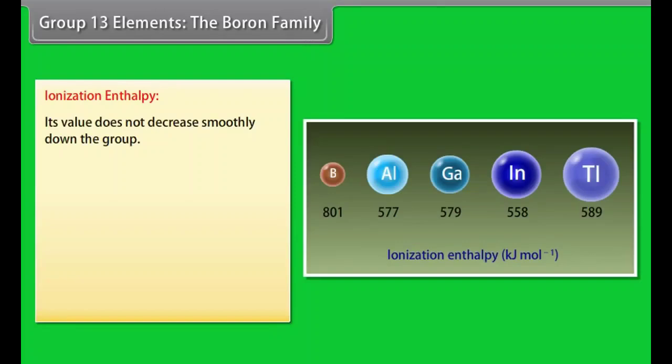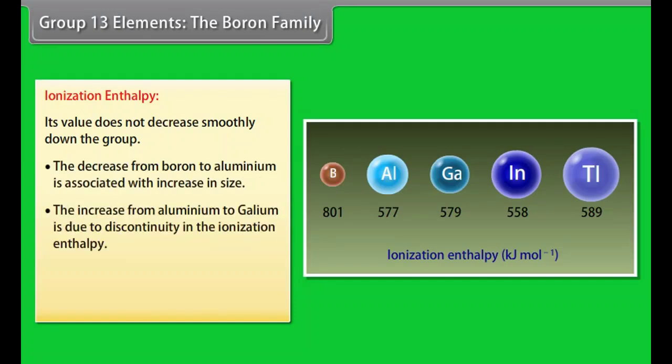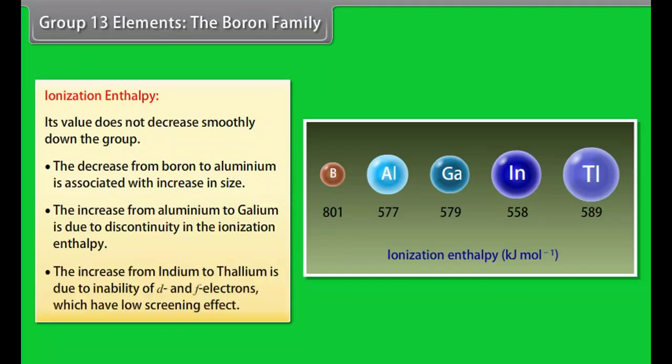Ionization enthalpy. Its value does not decrease smoothly down the group. The decrease from boron to aluminium is associated with increase in size. The increase from aluminium to gallium is due to discontinuity in the ionization enthalpy. The increase from indium to thallium is due to inability of D and F electrons which have low screening effect.